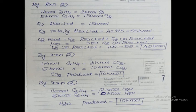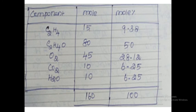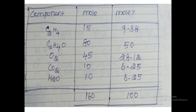Now we have all five components. Summary table: ethylene unreacted = 15 kmol, ethylene oxide (main product) = 80 kmol, oxygen unreacted = 45 kmol, carbon dioxide (side product) = 10 kmol, water (side product) = 10 kmol. Total moles = 15 + 80 + 45 + 10 + 10 = 160 kmol.